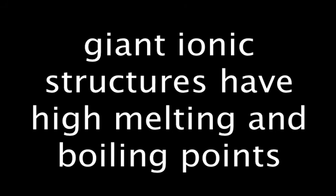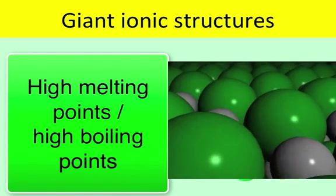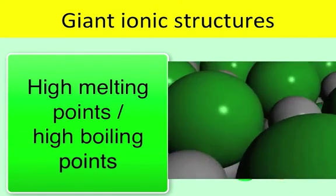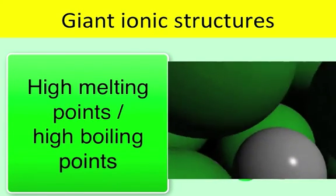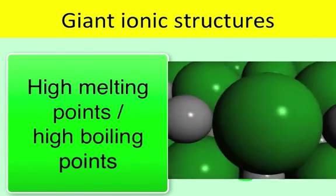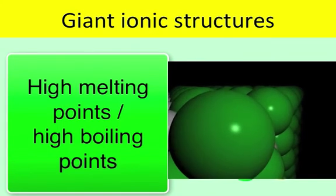So for that reason, the first property that we can talk about for giant ionic structures, for ionic structures, is that they have high melting and boiling points. They're difficult to melt. We need a large amount of energy to overcome the electrostatic forces between the ions. So ionic structures, ionic compounds tend to be solids at room temperature.